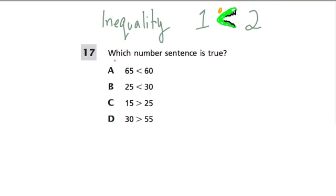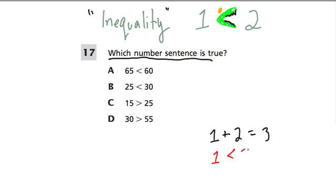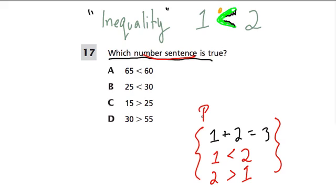So when they ask us which number sentence is true, they're saying which of these actually shows the right order for the inequality. A number sentence is anything that says something like 1 plus 2 is 3 — that's an equation, but we also call it a number sentence. It can also be something like '2 is bigger than 1.' These are all examples of number sentences — a relationship between numbers.